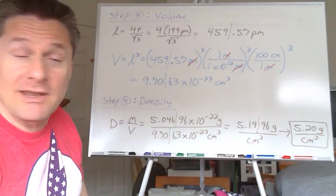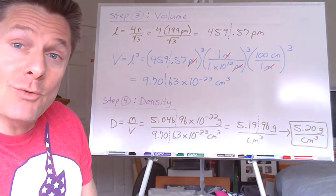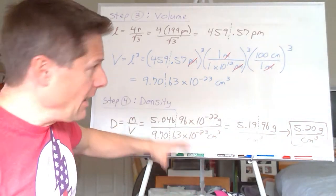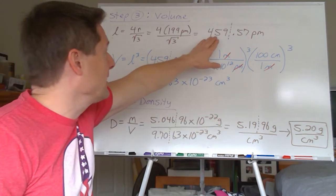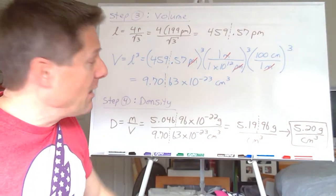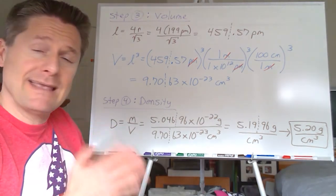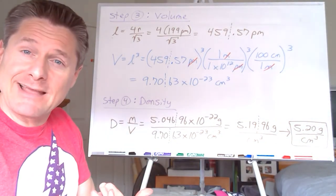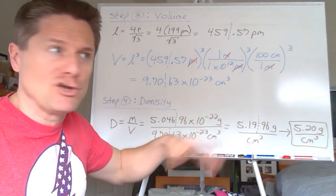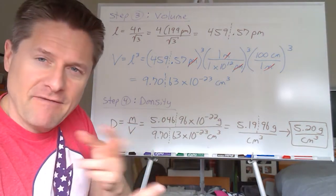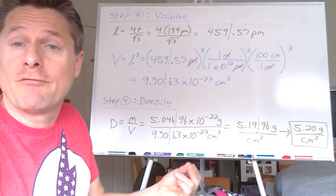You can check that against experimental densities — it's usually pretty close. You can do the conversion to centimeters cubed at different points in the calculation; it doesn't matter. But ultimately, don't round until the very end because you might incur rounding errors. So let's do the exact same type of problem but flip it backwards — the second type of problem — where I give you the density and the type of unit cell. We just did body-centered cubic, so let's do a face-centered cubic.